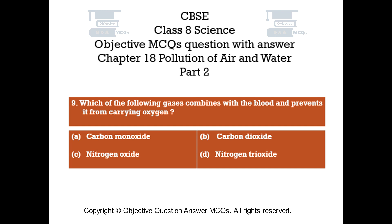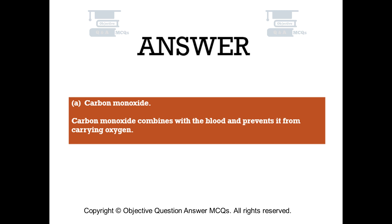Question number 9. Which of the following gases combines with the blood and prevents it from carrying oxygen? Option A: Carbon monoxide. Option B: Carbon dioxide. Option C: Nitrogen oxide. Option D: Nitrogen trioxide. The right answer is Option A — Carbon monoxide. Carbon monoxide combines with the blood and prevents it from carrying oxygen.